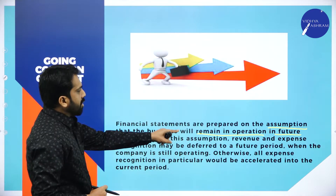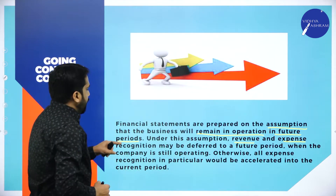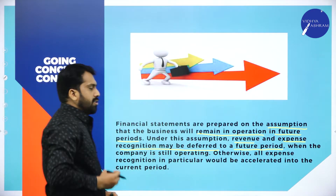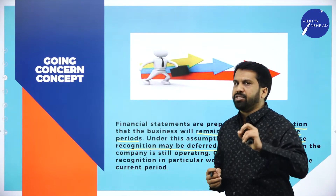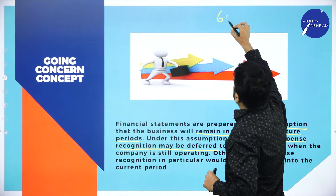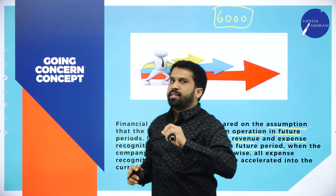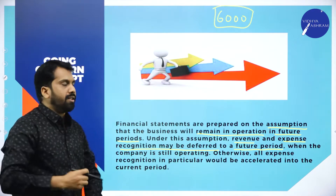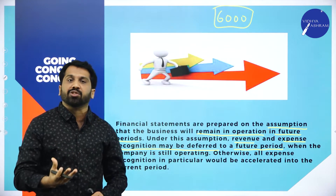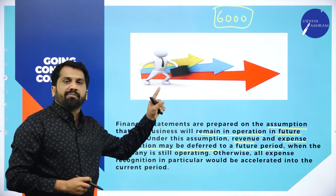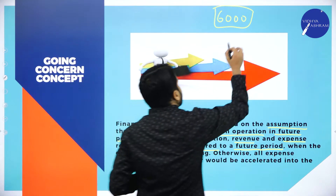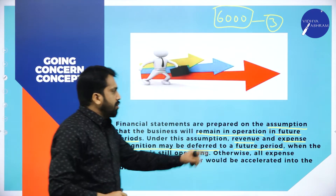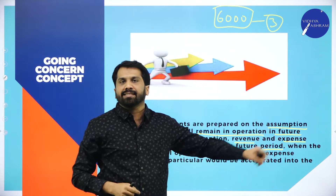Under this assumption, revenue and expenses recognition may be deferred to a future period when the company is still operating. For example, insurance — you pay insurance of 6,000 for your business stock. This insurance is for 3 years. Why have you taken insurance for 3 years? It means you assume that you will run the business for more than 3 years.